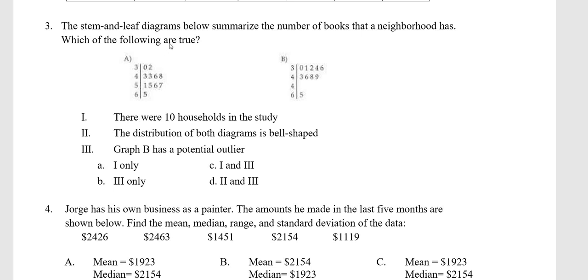Let's do problem number three. The stem-and-leaf diagrams below summarize the number of books that a neighborhood has. Which of the following are true? So let's go through each one.